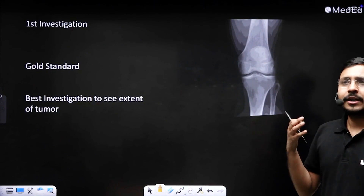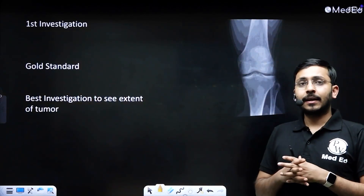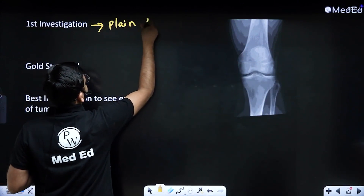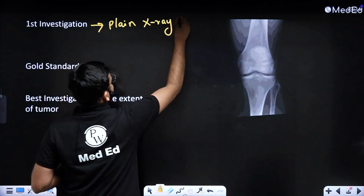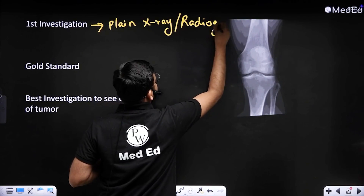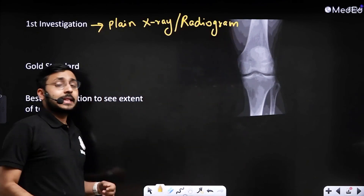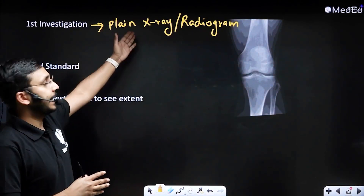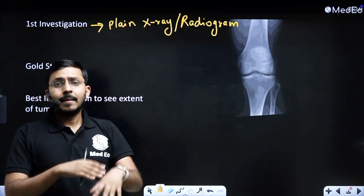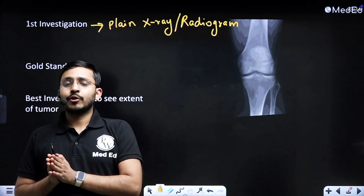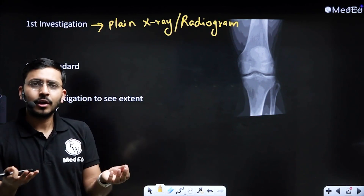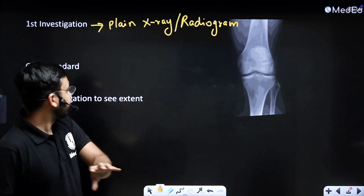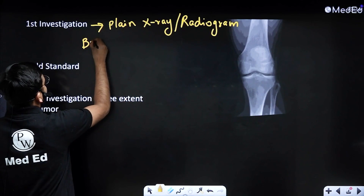Whenever we talk about bone tumors — or any musculoskeletal complaint — the first investigation we order is a plain x-ray, also known as a radiograph. In the previous question, the patient had a swelling in the knee, a musculoskeletal complaint, so a plain radiograph was ordered. For pain in joints, bones, or muscles, the first investigation is a plain radiograph: first to rule out a fracture, and also because bone tumor characterization is done on a plain x-ray.